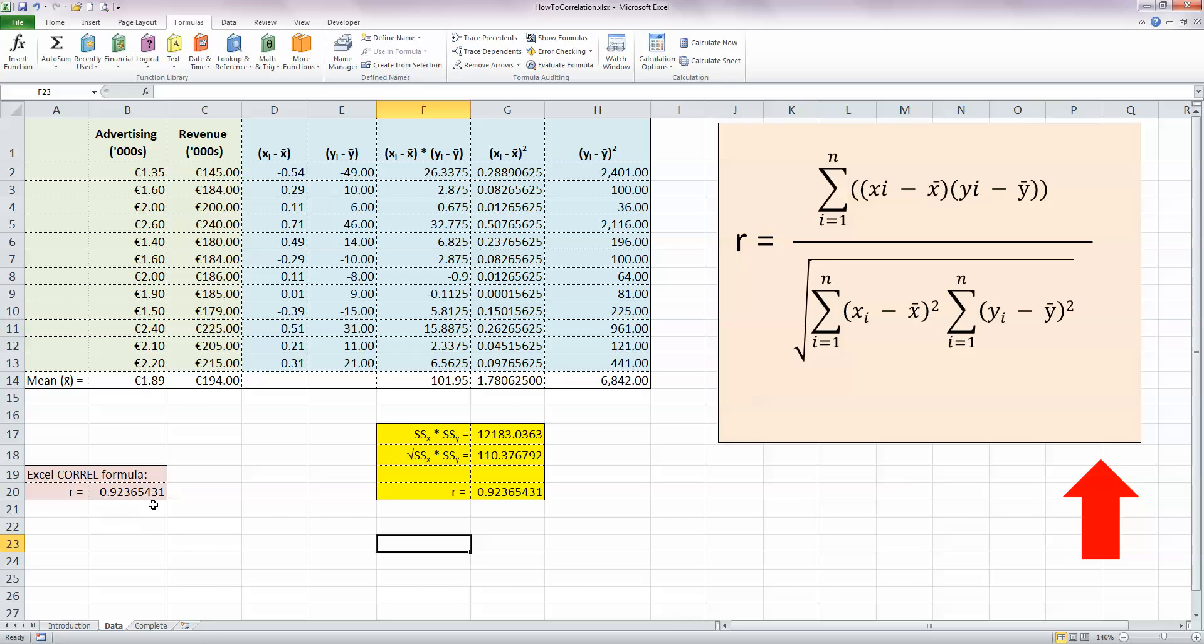And I can check here now that Corel, the Corel formula has given me a value which is exactly the same as my manual calculation here. So the manual way has also shown the exact same very strong correlation, positive correlation between advertising and revenue.